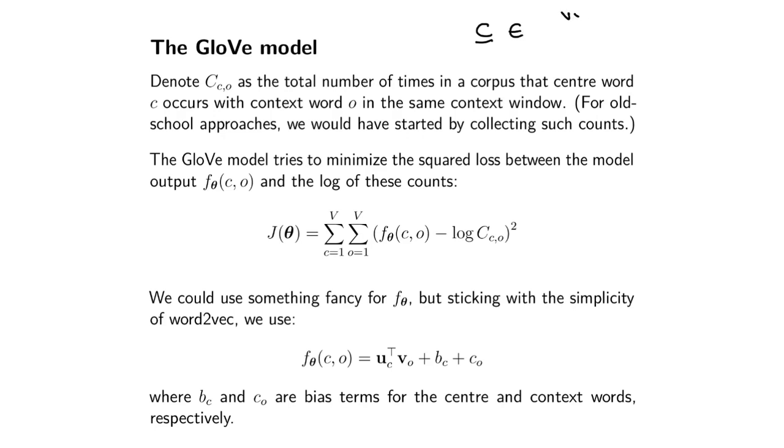C is this very big matrix. It's got V by V elements and they're all integers. Actually, you can also have zero counts. This is exactly what you would collect for the old school word embedding approaches.